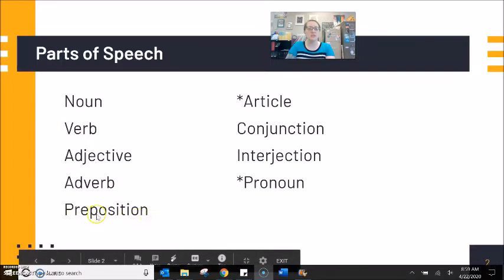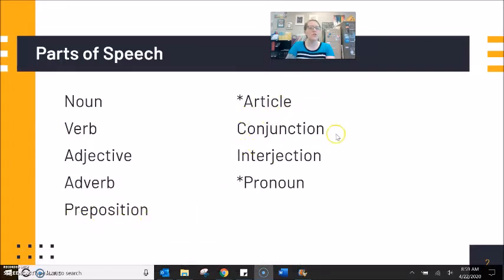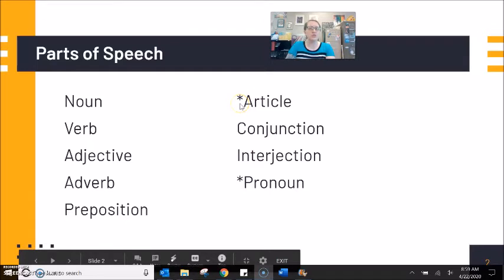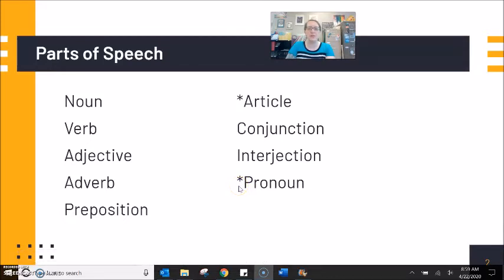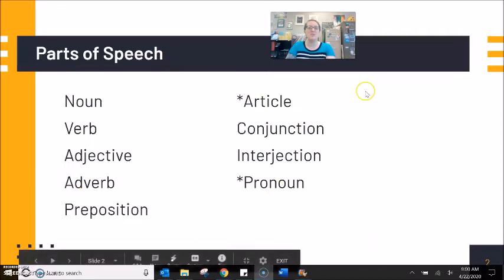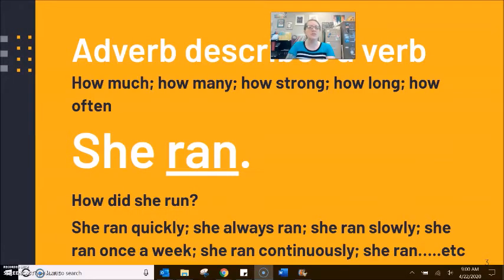We also have preposition, article, conjunction, interjection, and pronoun. Now, the reason that I have a small asterisk next to article and pronoun is that there is some grammar arguments about if pronoun is a separate part of speech, but pronoun is a type of noun. If article is a separate part of speech, but article is really a type of adjective. Even in grammar, there are arguments about what is correct and not correct. So, I'm putting them all here because different teachers will include different pieces as parts of speech. But for us, the focus is adverb.